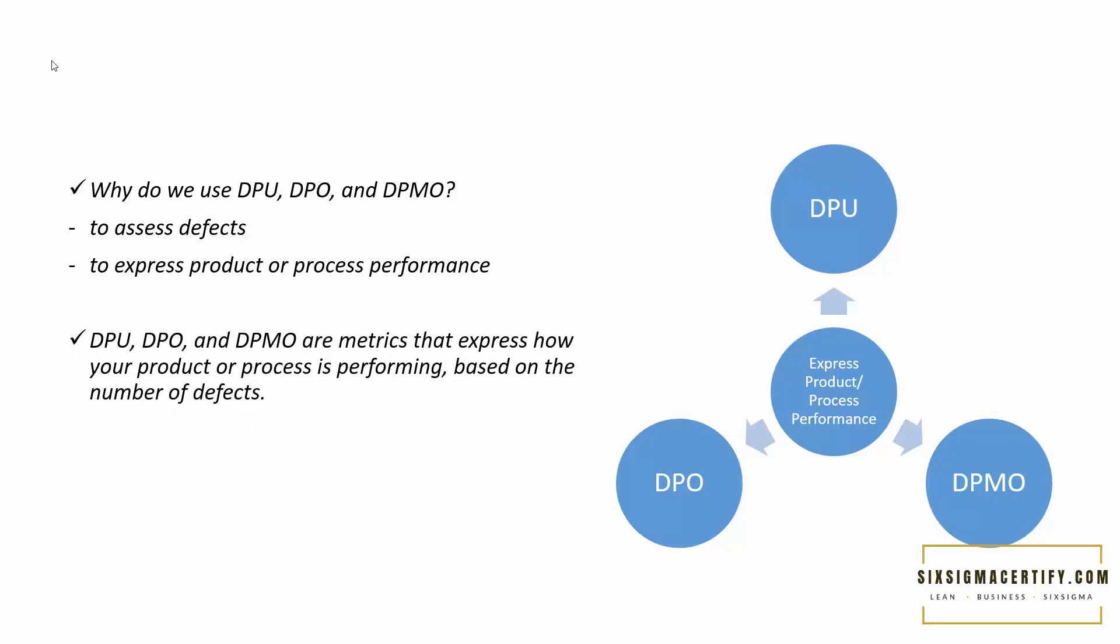DPU or defects per unit, DPO or defects per opportunity, and DPMO or defects per million opportunities are the matrices that express how your product or process is performing based on the number of defects.